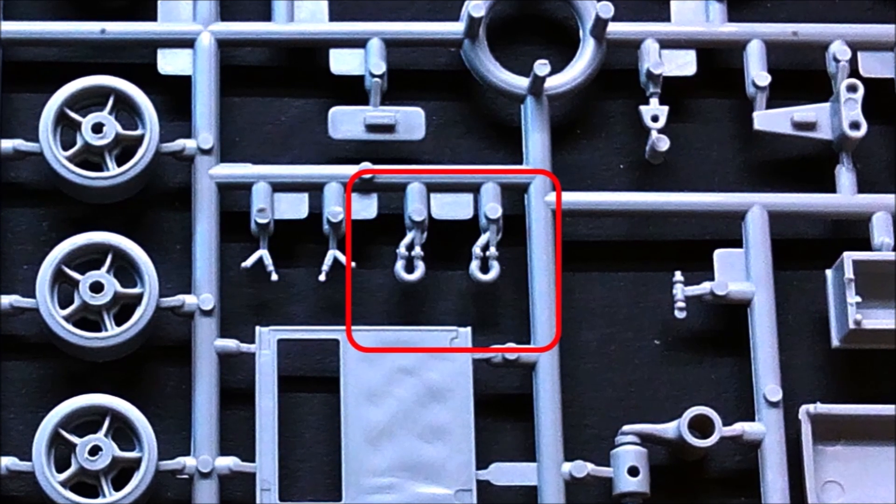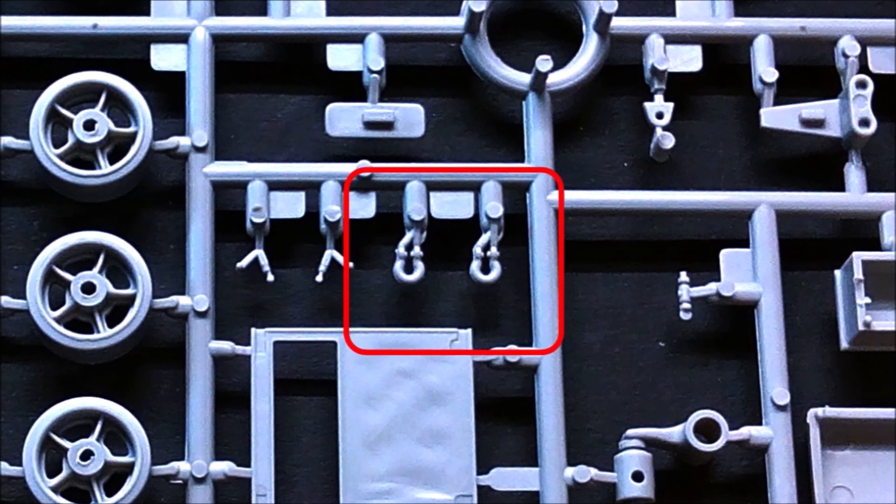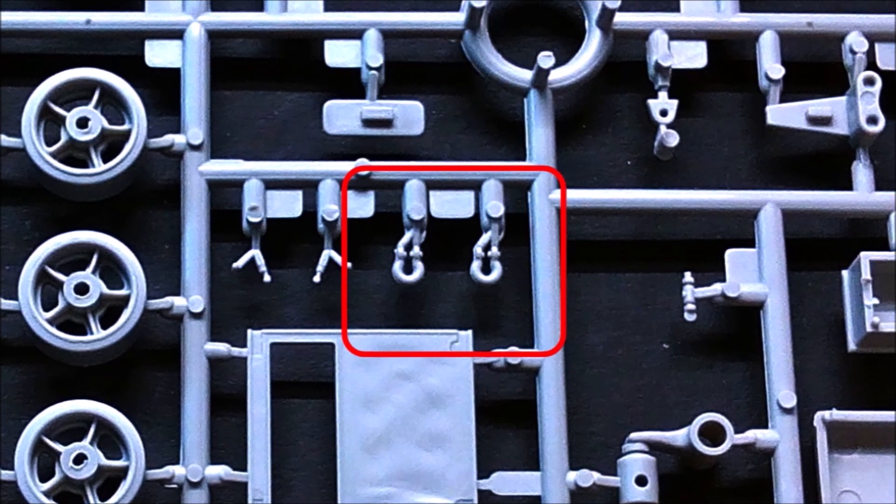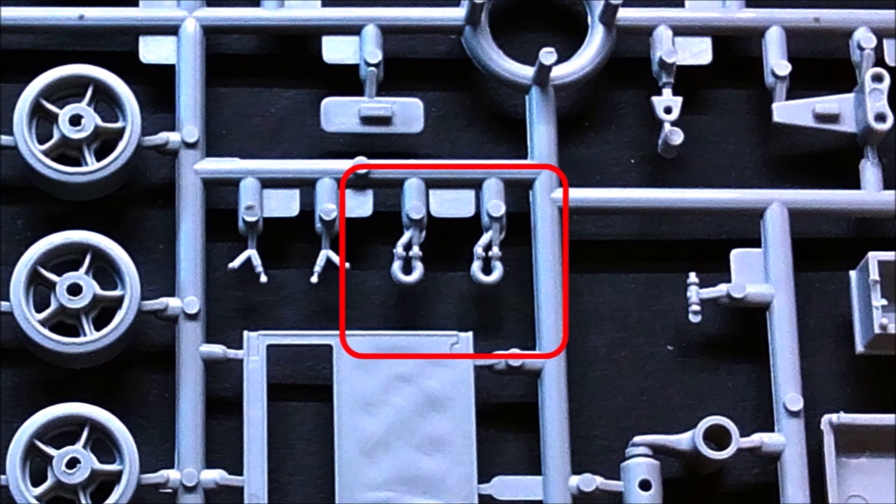I want to emphasize again that these issues go for this specific kit. The first Hobby Boss HST I bought came without flash and it would have been no problem to use the shackles. I looked for matching shackles, but what I found was too small, too big, or had the wrong shape.